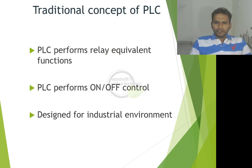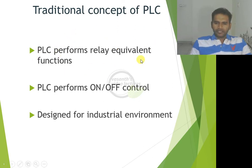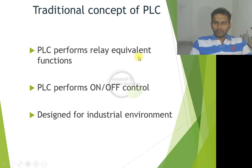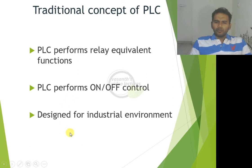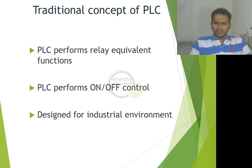Coming to traditional concepts of PLC: a PLC performs fundamentally a relay function. A relay switches a higher voltage or current using a smaller voltage or current. Relays are generally found in air conditioning units to regulate cooling, washing machines, and refrigerator systems. A relay is basically an on-and-off switch. PLCs perform all equivalent relay functions and can perform on-and-off control or continuous control. They are designed for industrial environments and follow certain safety standards, meaning they will not catch fire when working in typical industrial environments where fumes are prevalent.